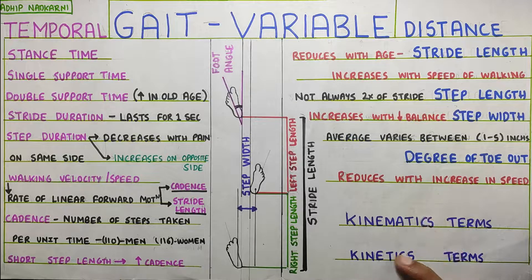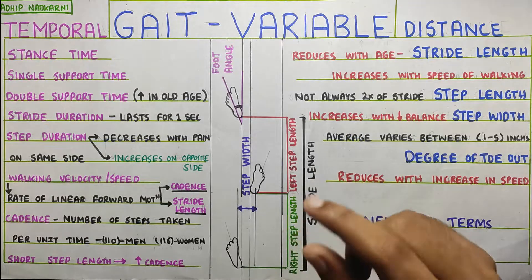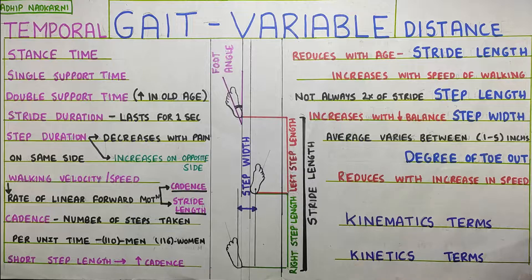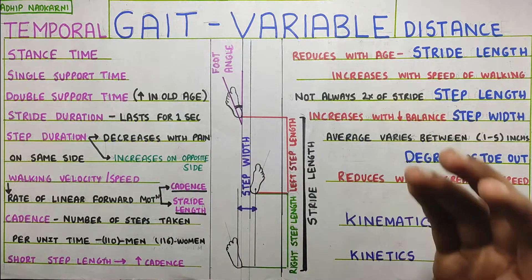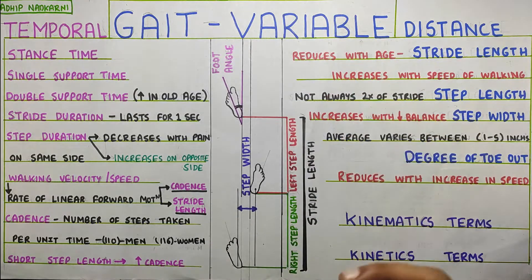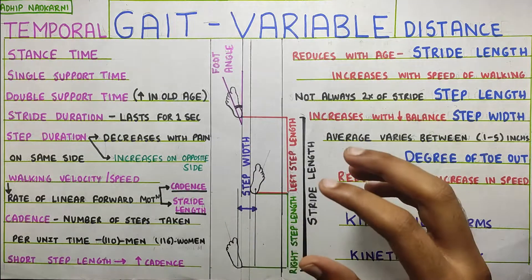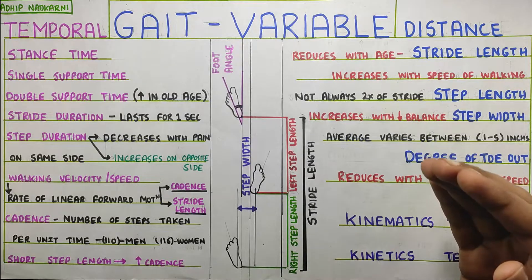So, after this, we have the kinematics and kinetics. As I mentioned, kinematics is about all the joint angles, which is the complex stuff as it's seen. But I'll try to make it as simple as possible. And then kinetics is about the forces that are acting. So, these two we will cover in the future videos.